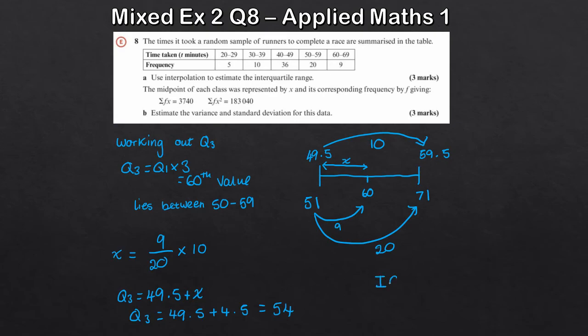So the interquartile range. That's just going to be Q3, 54, minus Q1, which is 40.9, to give 13.1 there. So like you can see, it's quite methodical.